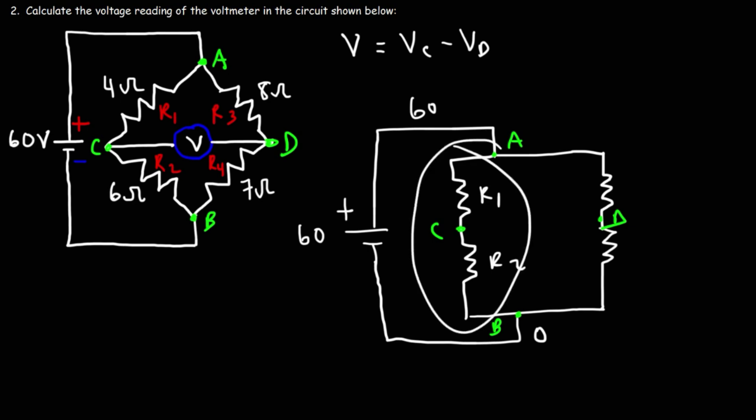How can we determine the potential at C and at D? This is R1 and this is R2. If we focus on this branch of the circuit, notice that this forms a voltage divider. To calculate the voltage across R2, we could use this formula. So V across R2, that's going to be R2 over R1 plus R2 times the voltage of the battery, or the source of voltage.